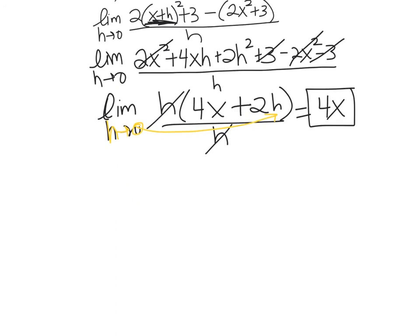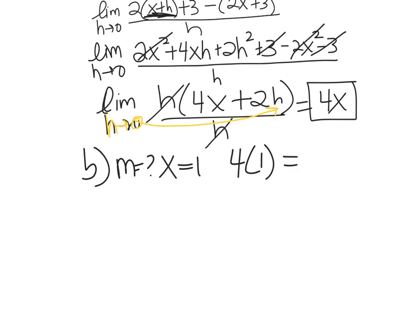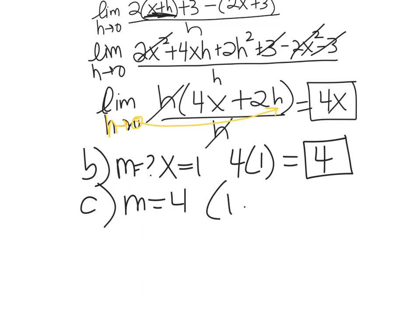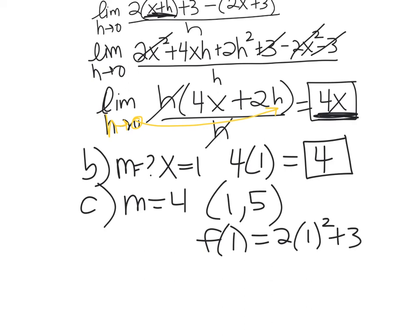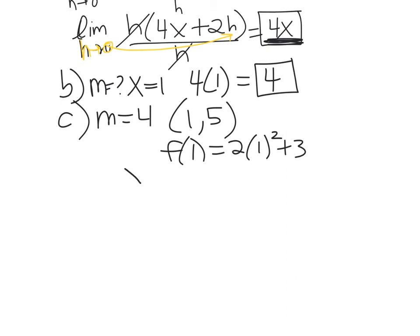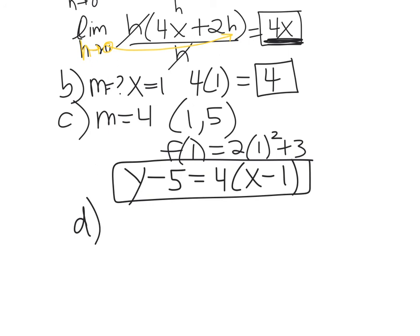Part b: slope at x = 1 is 4(1) = 4. Part c: find the y-coordinate — f(1) = 2(1)² + 3 = 5, so the point is (1, 5). The tangent line is y − 5 = 4(x − 1). Part d: the normal line has slope −1/4, so y − 5 = −(1/4)(x − 1).